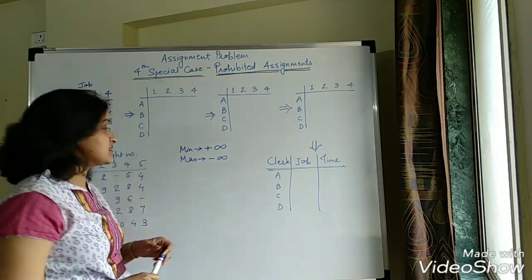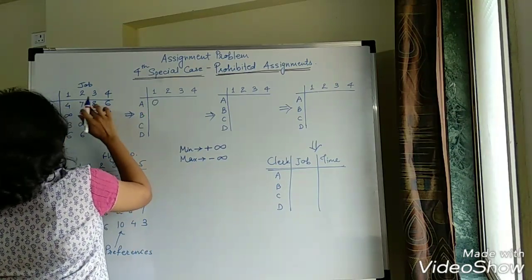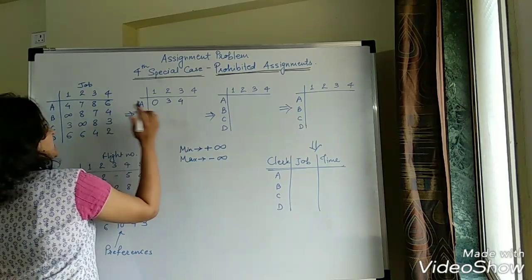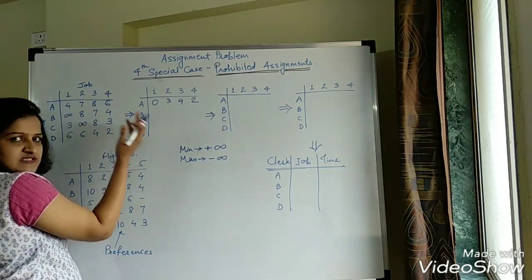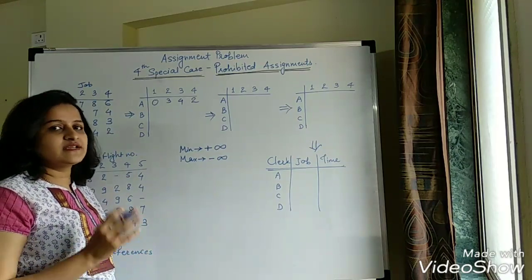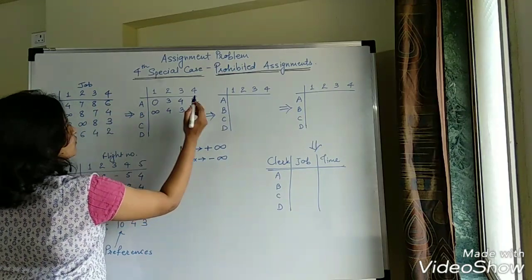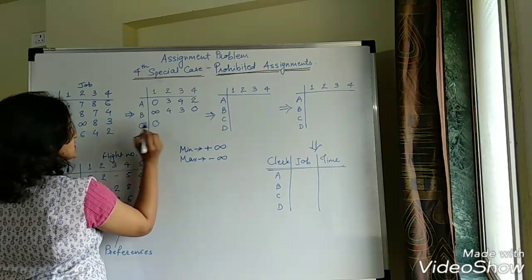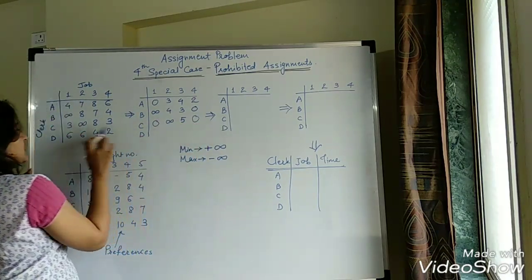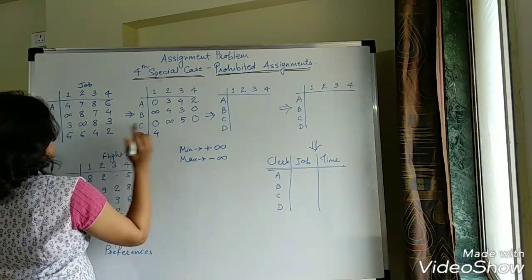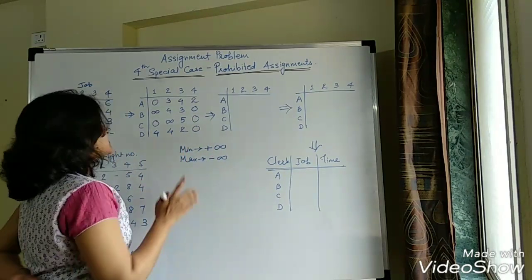The first step is row subtraction, then column subtraction. For row subtraction: Row 1 — smallest number is 4; subtracting gives 0, 3, 4, 2. Row 2 — smallest is 4; infinity minus 4 stays infinity, giving infinity, 4, 3, 0. Row 3 — smallest is 3; giving 0, infinity, 5, 0. Row 4 — smallest is 2; giving 4, 4, 2, 0. This completes row subtraction.